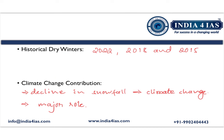Looking at the historical dry winters in Jammu and Kashmir, several years in the last decade have experienced dry winters — notably 2022, 2018, and 2015 — with reduced snowfall and very little precipitation. Climate change experts have suggested that climate change is one of the major contributors to declining snowfall in the Jammu and Kashmir region.